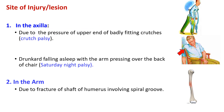The sites of injury to the radial nerve can be at two places: first, in the axilla, and second, in the arm. In the axilla, there could be two reasons. The first is due to the pressure of the upper end of badly fitting crutches, and this is known as crutch palsy.